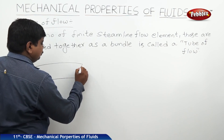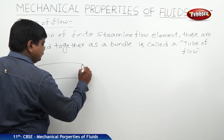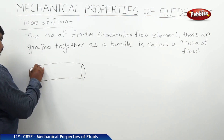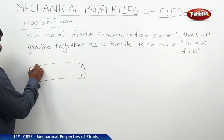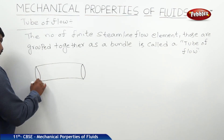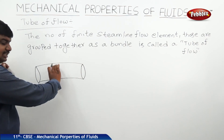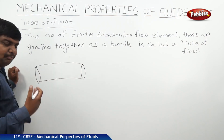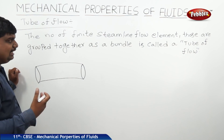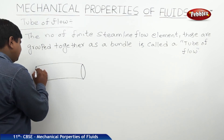The general picture of the tube of flow is a tube of finite dimensions. Inside this tube we should assume many finite elements of the streamline flow.